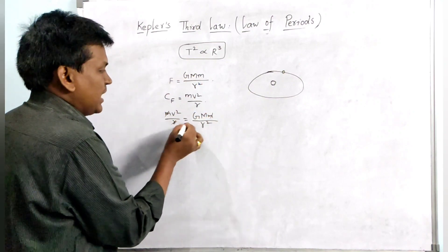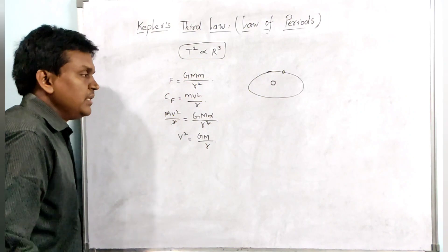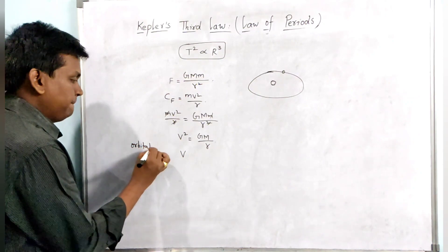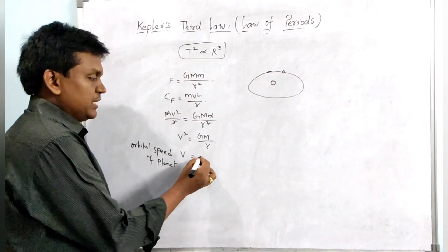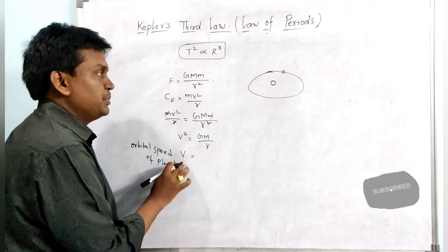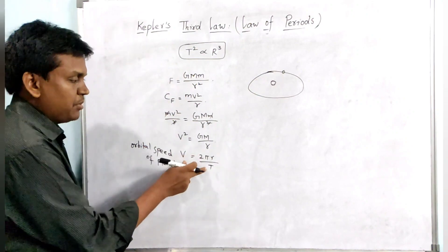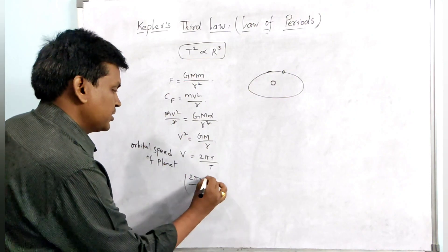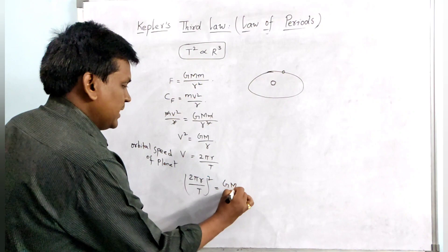The small m values cancel, and R terms cancel, giving us v squared equals G·M divided by R. We also know that the speed of the planet V equals the distance travelled divided by time, which is 2·π·R divided by T. So substituting, v squared equals 2·π·R divided by T, all squared.